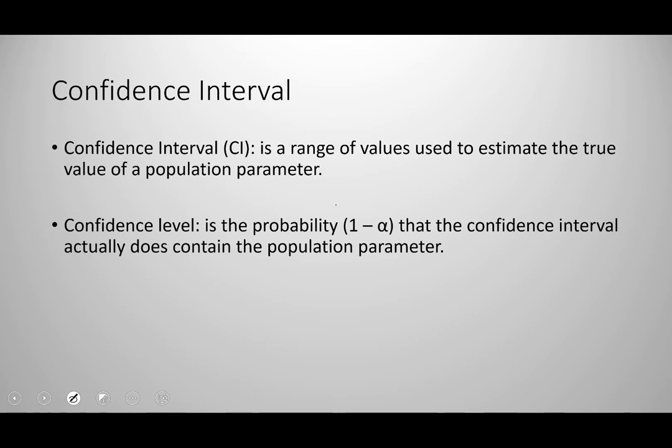Because we don't know how accurate our point estimates are going to be, oftentimes we will use a confidence interval instead. A confidence interval is a range of values used to estimate the true value of a population parameter — so instead of a single estimate, we give a range. The confidence level is the probability that the confidence interval actually contains the population parameter, and we are either told the confidence level or compute it as 1 minus alpha.